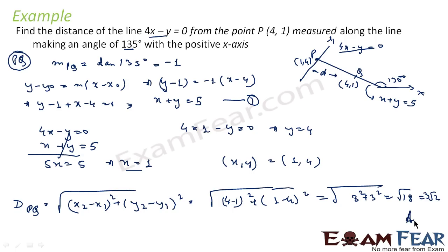Very simple. We knew this point, we knew the slope of line PQ, we knew point q, we found the equation of line PQ, we equated it with line L1 to find the common point p as (1, 4), and then we found the distance between p and q, which turned out to be 3 root 2.